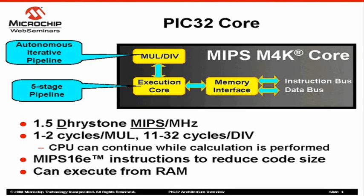The PIC32 uses the high-performance version of the multiply and divide hardware module. A very powerful feature of this module is that it contains its own autonomous pipeline. Once the CPU issues a multiply or divide instruction, the CPU may continue to fetch and execute the next instructions while the multiply and divide unit performs calculations in parallel. If the CPU tries to access the result before the operation is complete, the CPU will stall until it is. It takes one cycle to perform a 16×16 or 32×16 multiply operation, and two cycles for other sizes. The divide operation takes from 11 to 32 cycles, with the exact cycle count depending on the dividend operand size — the smaller the dividend, the shorter the divide operation.